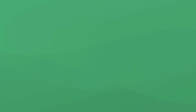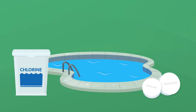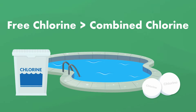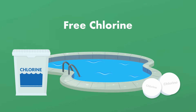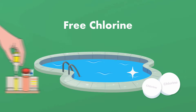Bottom line: in order for your pool to be properly sanitized, the free chlorine level must remain higher than the combined chlorine level. You need that free, or available, chlorine to sanitize your pool. So test your pool water regularly with test strips or a liquid test kit.